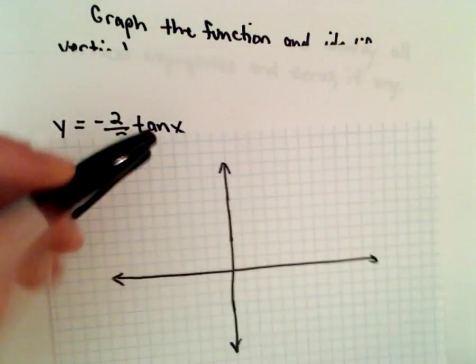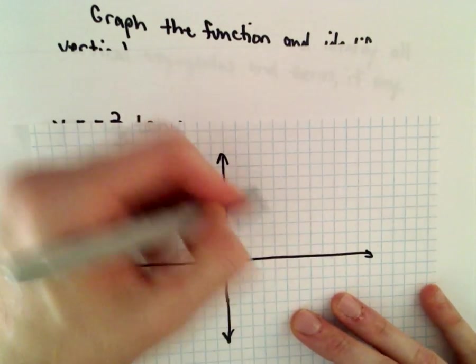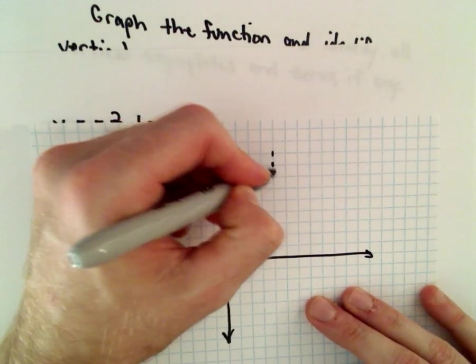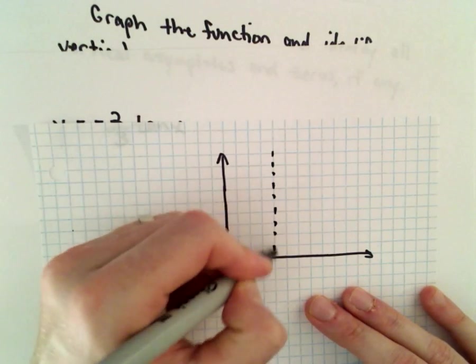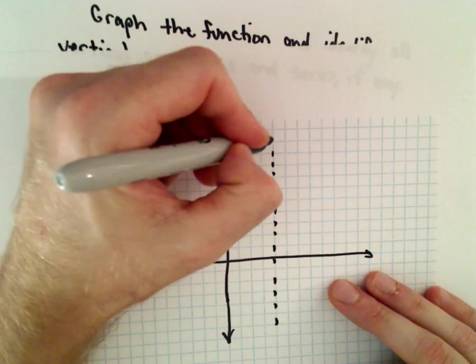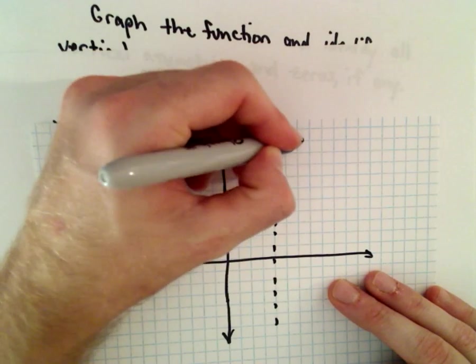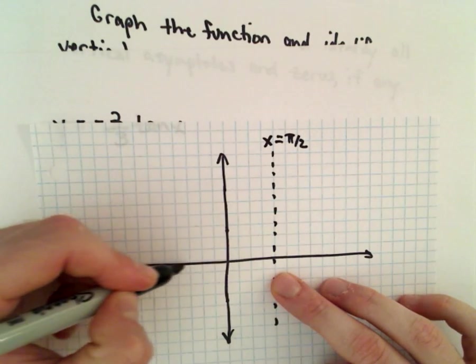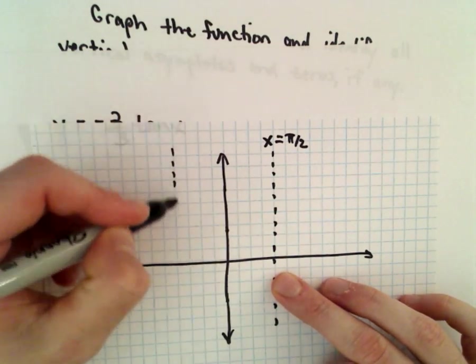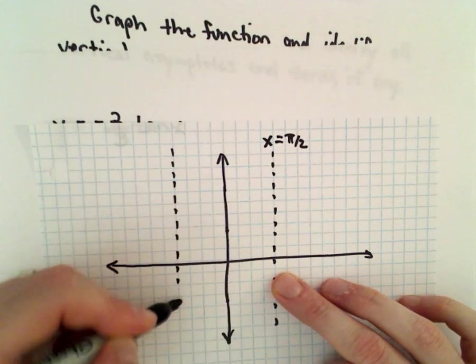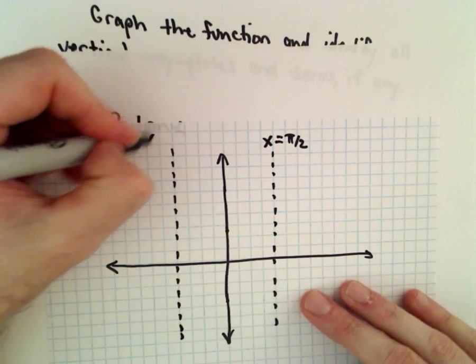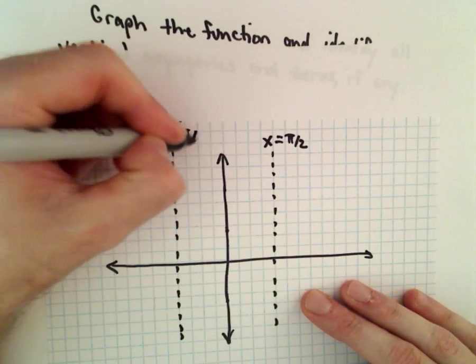So tangent of x normally has asymptotes. Its first asymptote occurs at—the first positive asymptote occurs at pi over 2. The largest negative asymptote is at negative pi over 2.